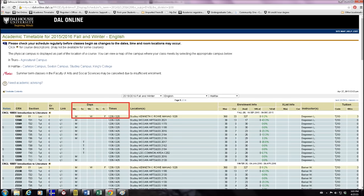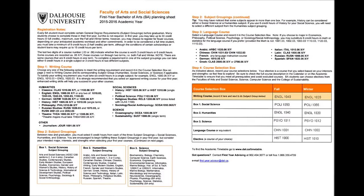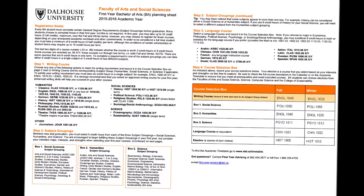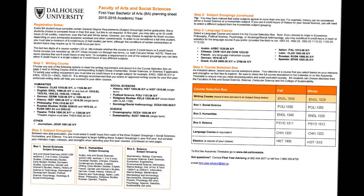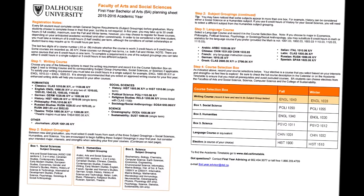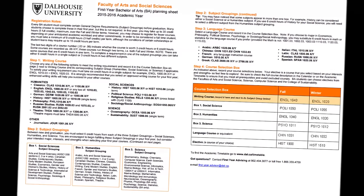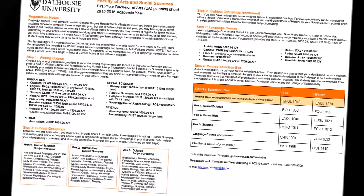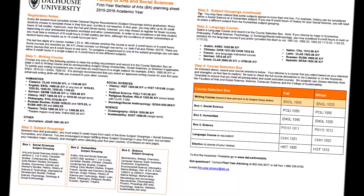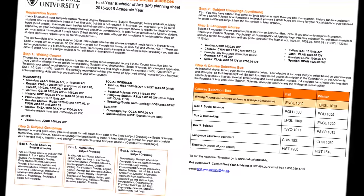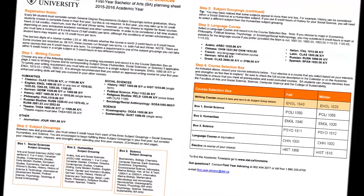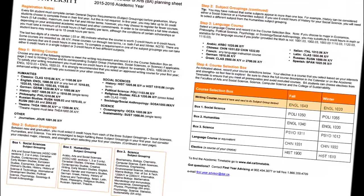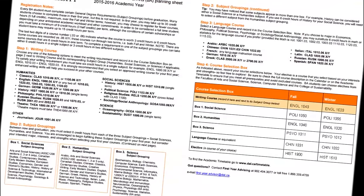Once you've settled on a course based on its description and ability to fulfill a requirement, make note of the course name and number on your worksheet. Here's an example of a completed first year worksheet for a Bachelor of Arts student who is thinking about majoring in political science but also wants to explore his or her interest in English. Take a look.